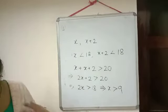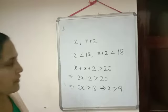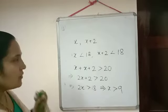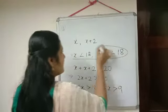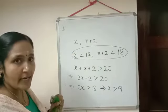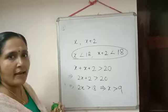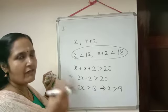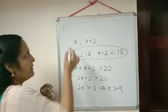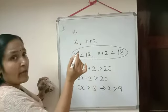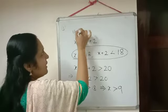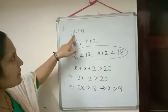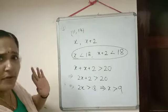So the two odd numbers we are taking: x should be greater than 9 and it should not be equal to 9. We have to remember both conditions: both numbers should be smaller than 18 and x should be greater than 9. The next odd number after 9 is 11. So the first pair is 11 and 11 plus 2, that is 11 comma 13. Let's check: 11 plus 13 equals 24, so their sum is greater than 20.